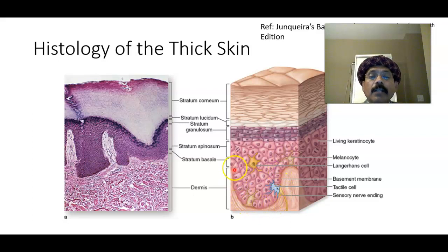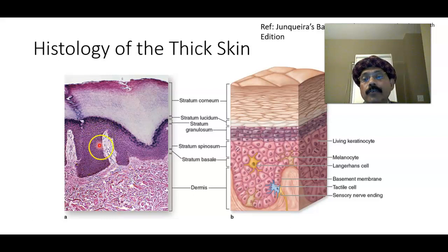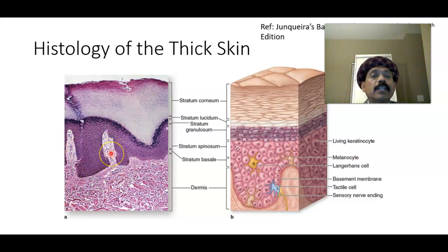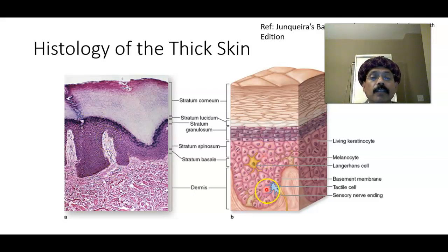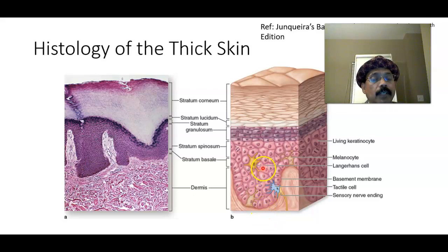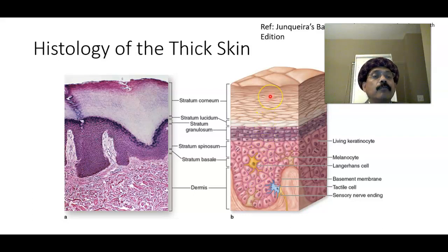This is the epidermal peg or ridge, and this is the dermis. This is the dermal papilla — they interdigitate so that the bond between the epidermis and dermis is strong due to the interdigitation of the epidermal peg and the dermal papilla. These epithelial cells are also called keratinocytes, because ultimately we get the keratinized layer. Keratinization begins from the stratum spinosum layer, progresses upward, and is totally complete at the stratum corneum.